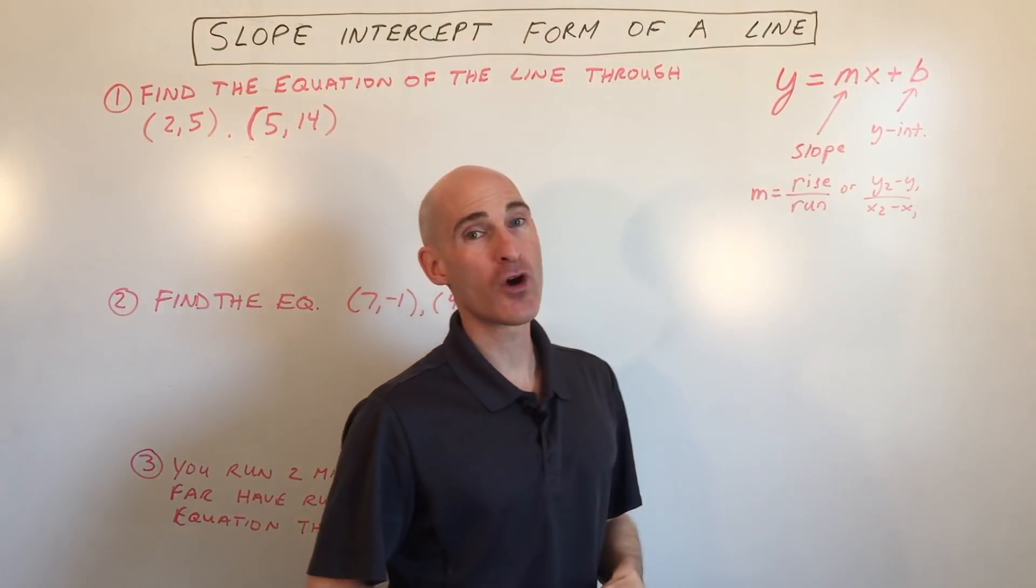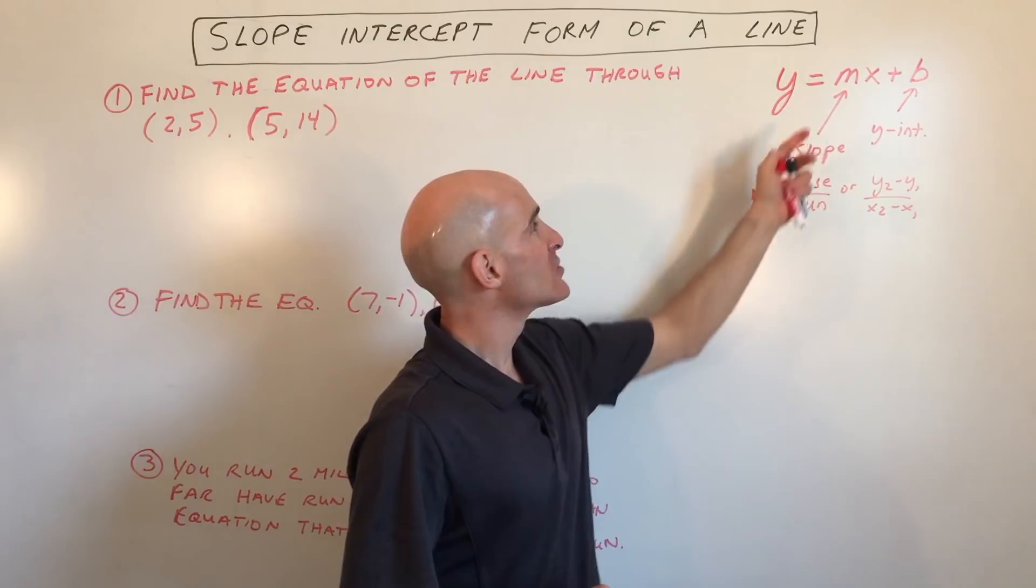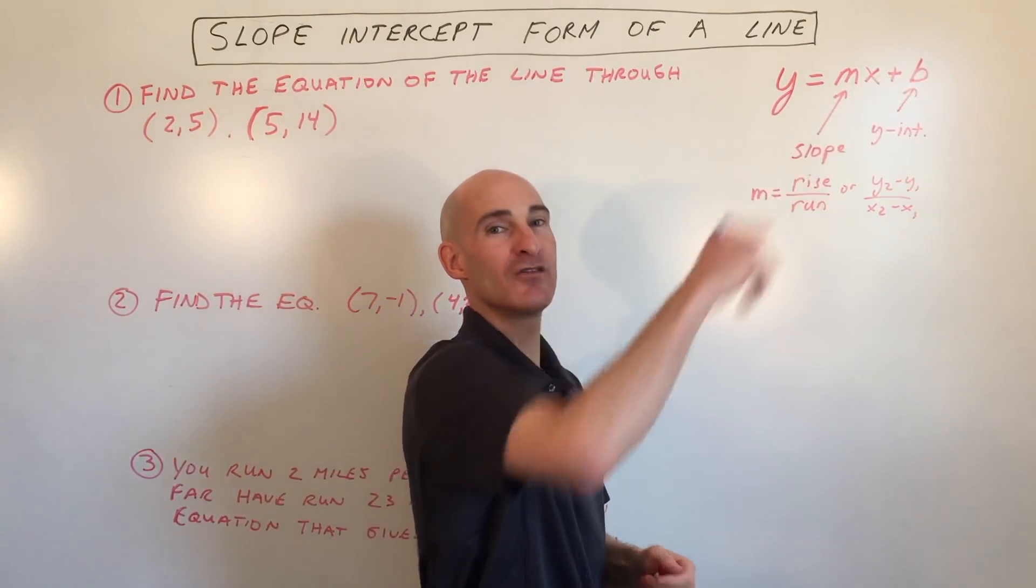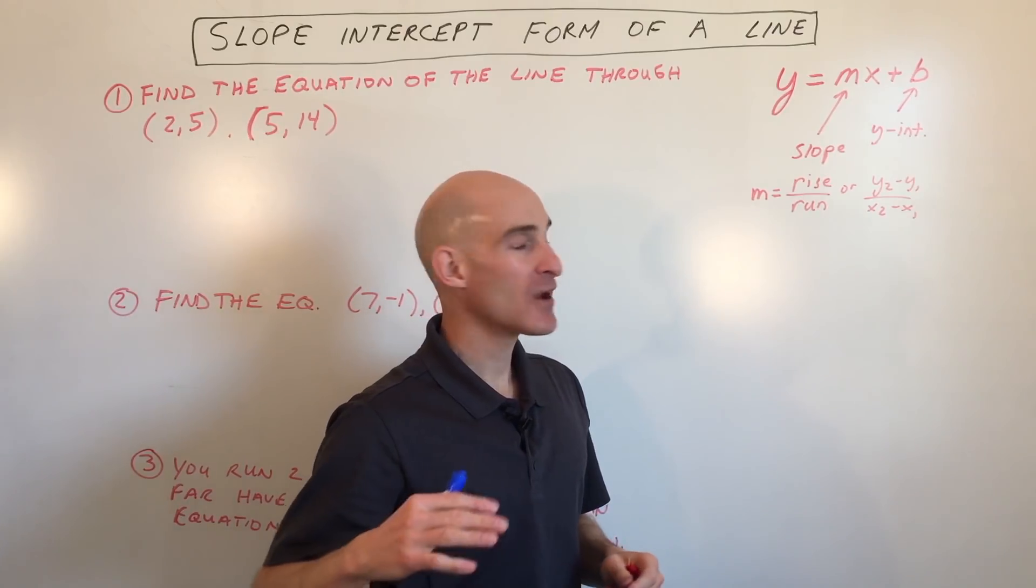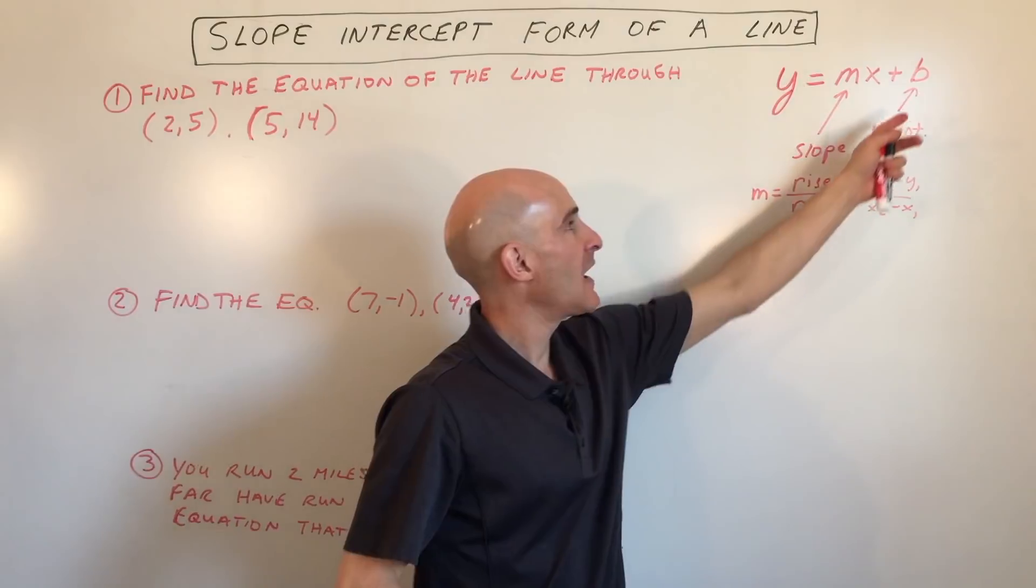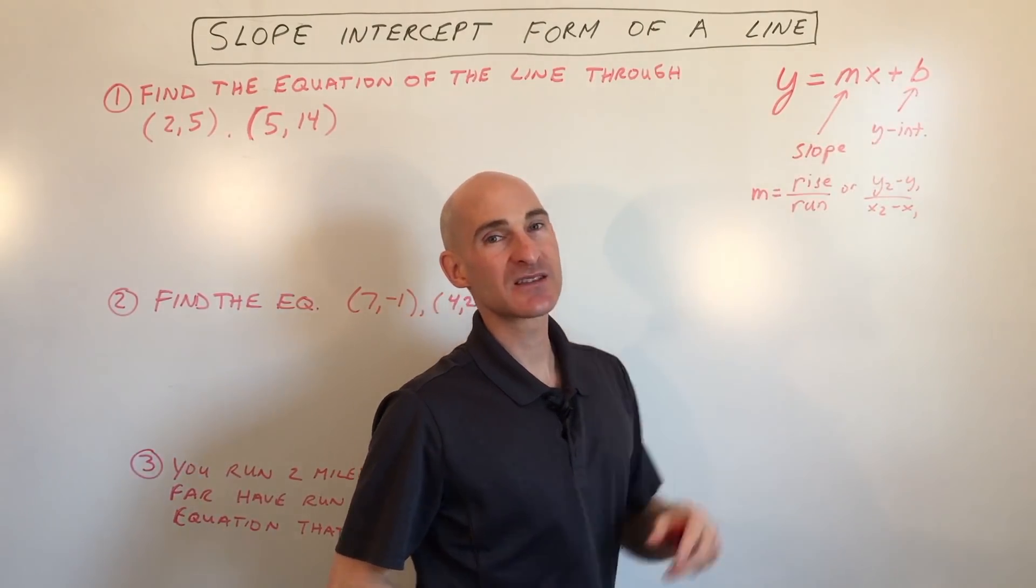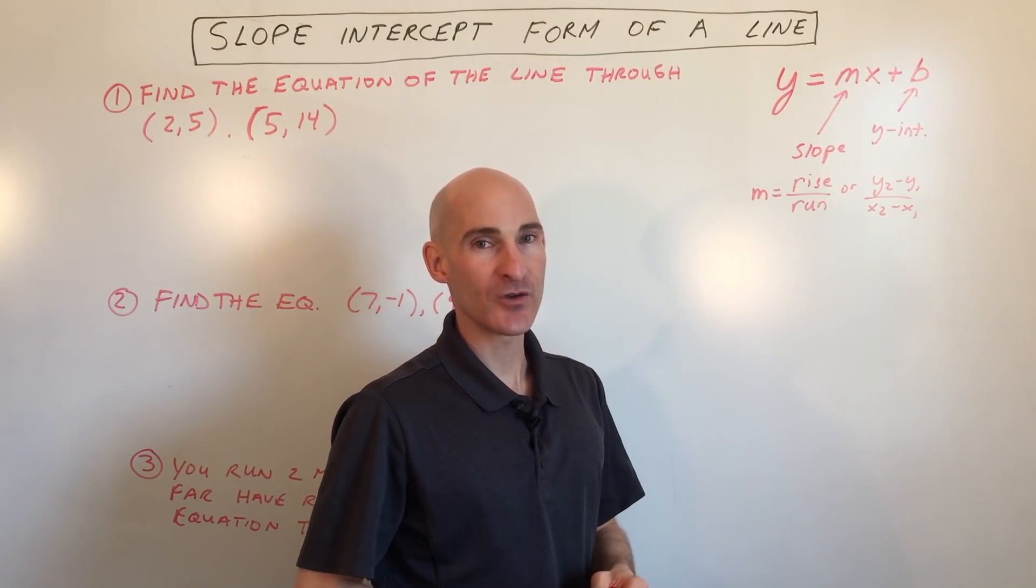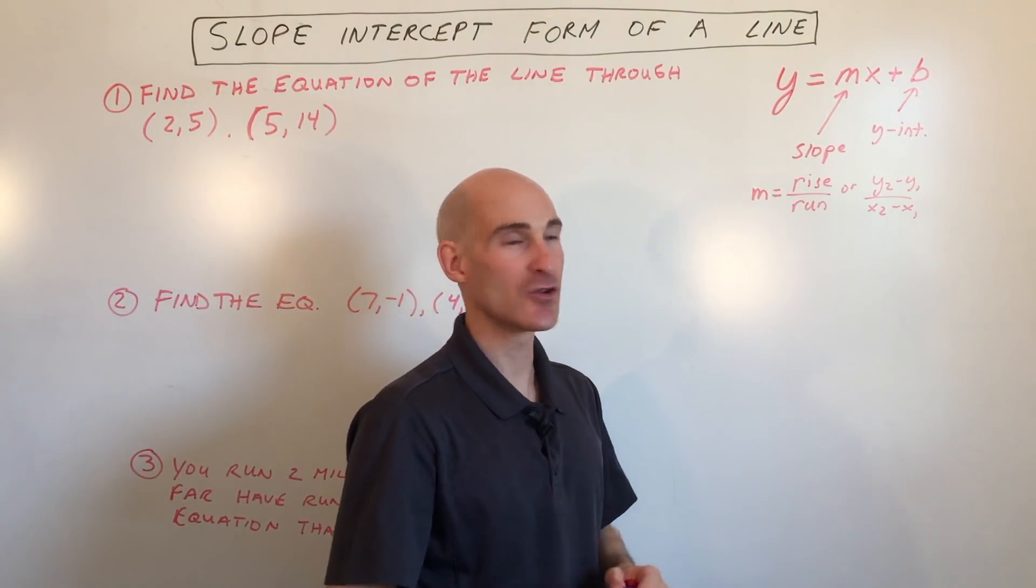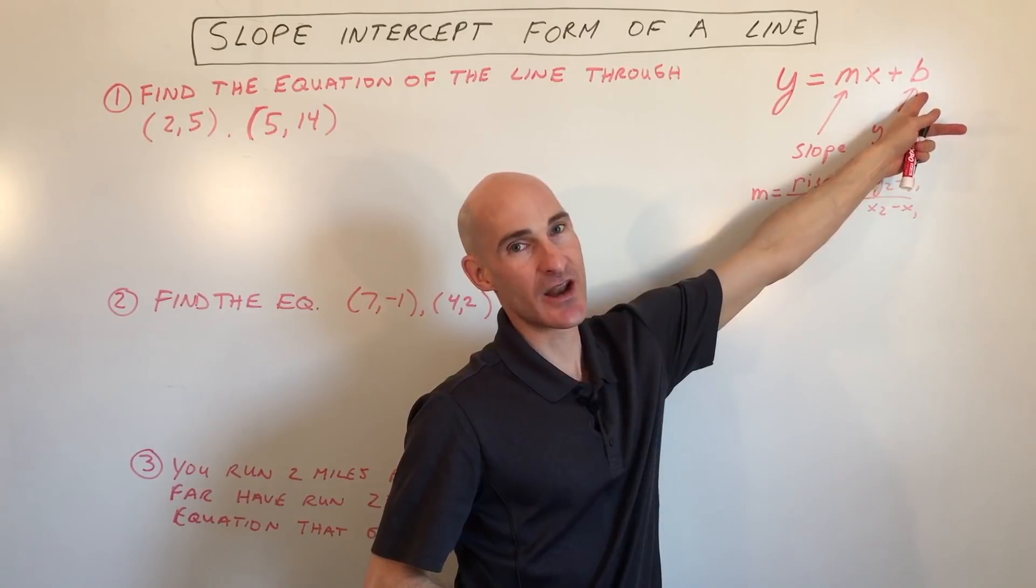Y equals mx plus b form of the equation of a line. So the m is the slope - slope is like a ski slope, it's the angle of the line, the rate at which it increases or decreases. And the b is the y-intercept, that's the starting value. It's what you start at and then you either go up or down from there based on the slope. This is a constant, it's just a number.